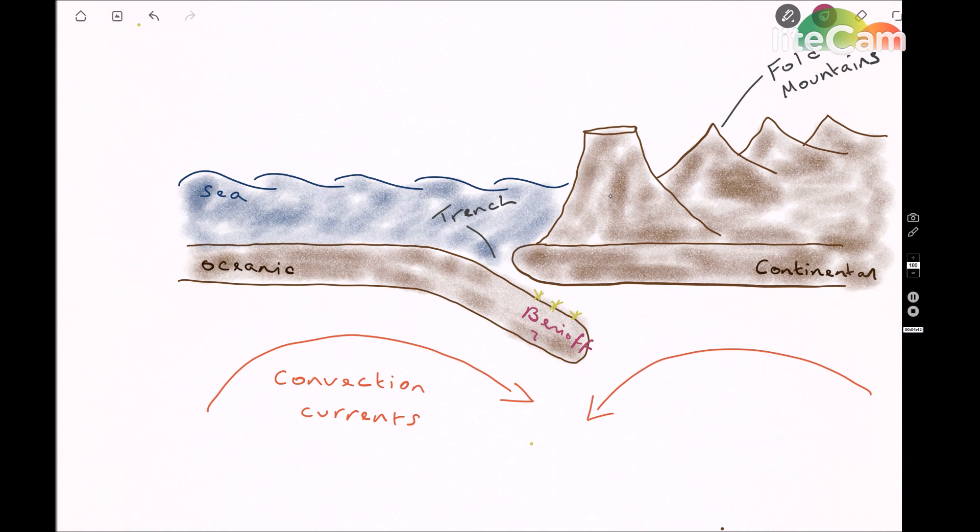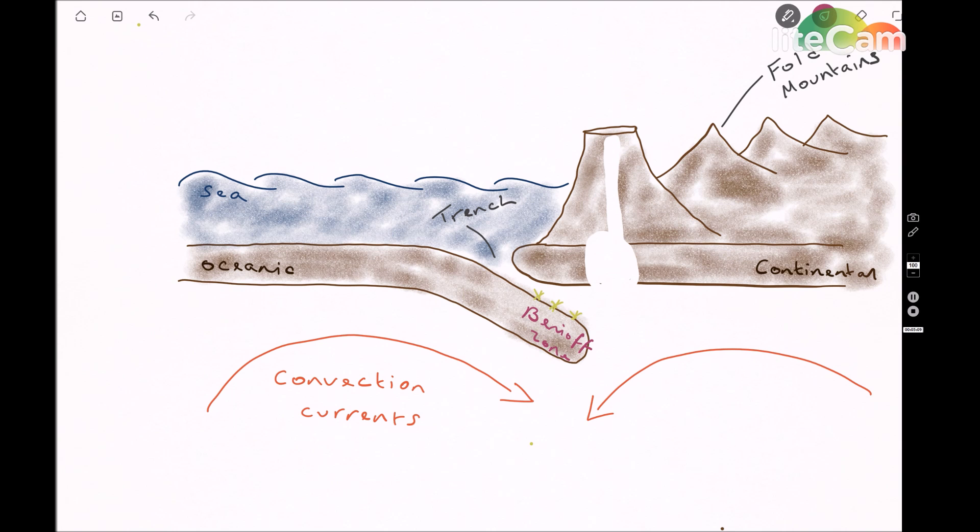And on top of the continental plate, we get very typical features like large, destructive volcanoes and also fold mountains as well. Do not forget the fold mountains.